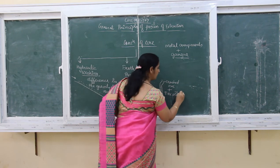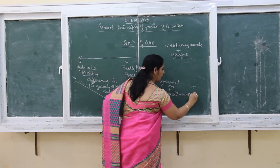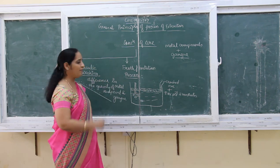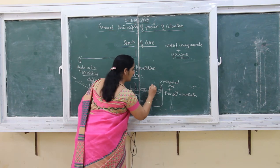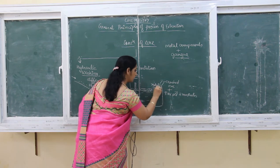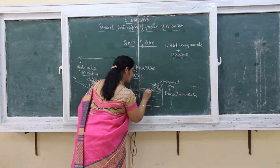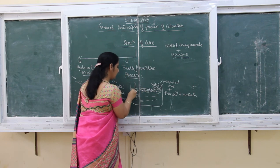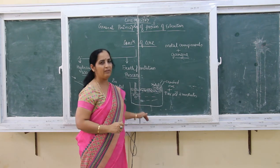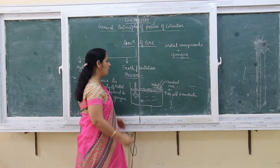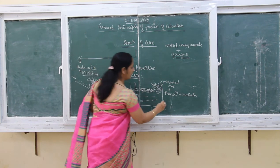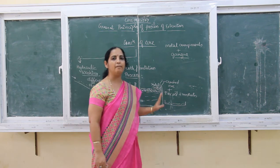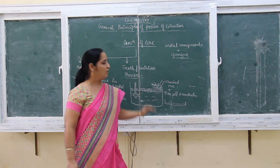In the froth flotation process, we take a large tub of water in which the crushed ore is fed along with pine oil. We can also add xanthates, which are soapy materials that produce more froth. When we agitate the mixture, all the metal sulfide particles stick to the froth. The dots on the froth represent the metal sulfide particles, while all the other gangue particles remain in the water. The froth is then skimmed off and kept in another container.